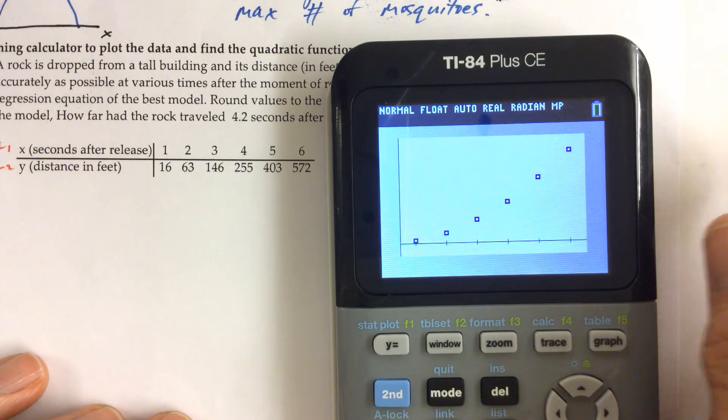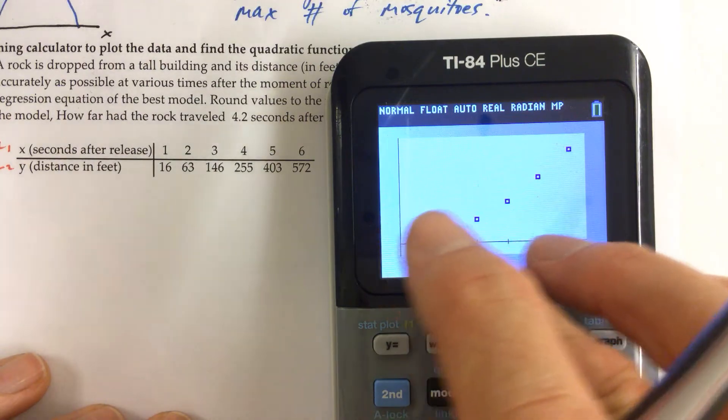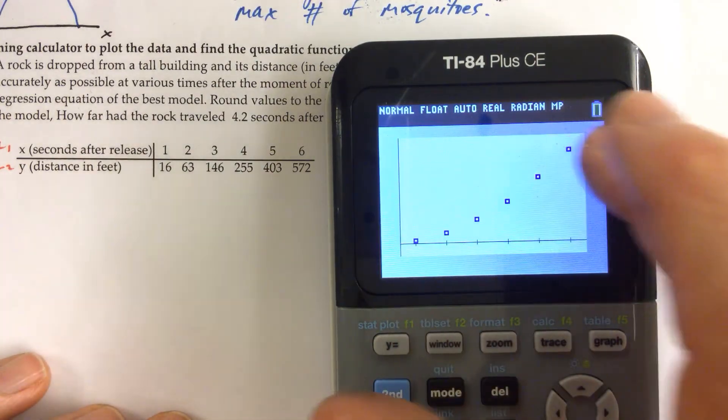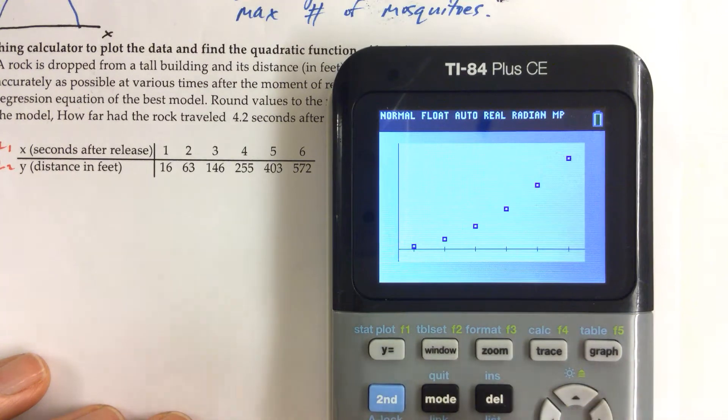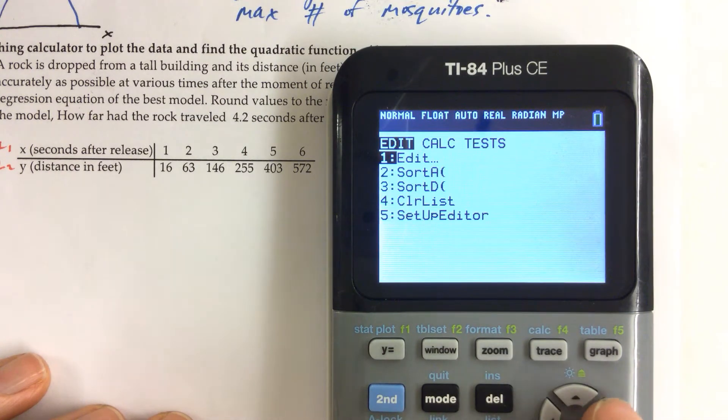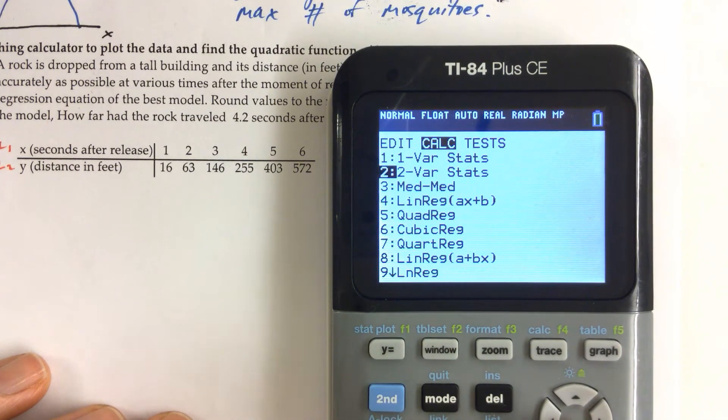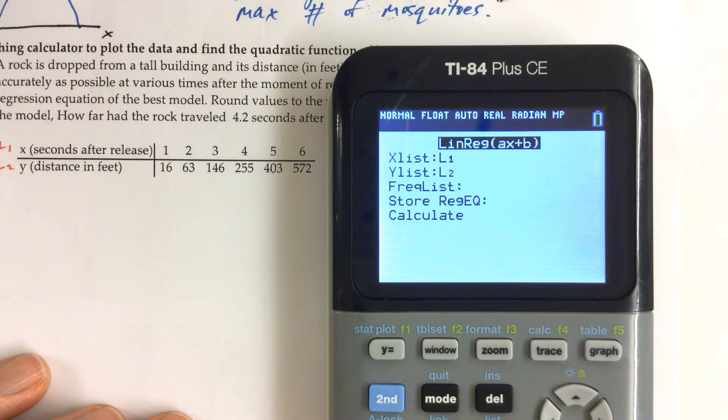Now, in one of our previous units, we calculated a line of best fit, but this looks more like there's a curve to it. And if we did calculate stat, right arrow for calc, and then linreg, that's linear regression, and we just hit enter all the way down.